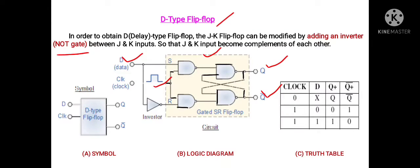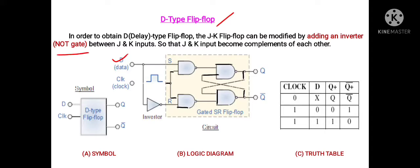Due to the circuit arrangement at the input, the value of the D input is either one or zero at any time. When D equals one, the value at the output of the inverter gate is always zero, and vice versa. Looking at the truth table, we have the D input column, the output Q column, and its complement Q-bar.